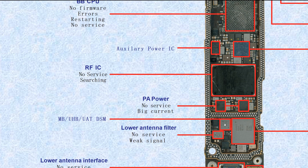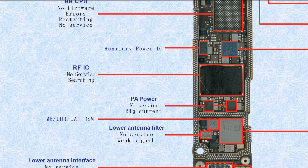The low antenna filter — if broken, it causes no service or weak signal. This one is the MB/UHB/UAT/DSM: MB means medium band, UHB means ultra high band, UAT means up antenna, DSM means digital switch module — this is an antenna switch.